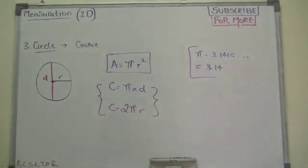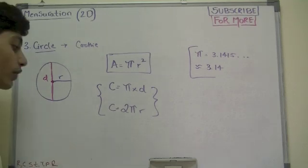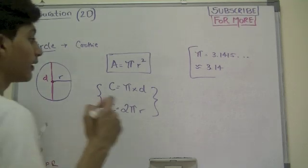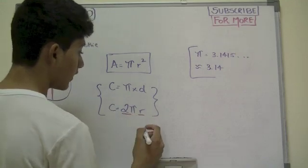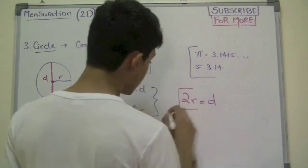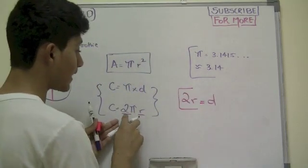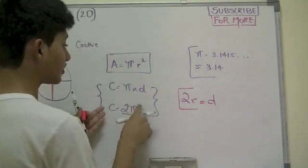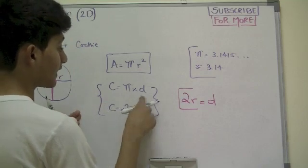If you notice, both are the same because you have two times the radius, and we said whenever there's two times the radius, it's diameter.